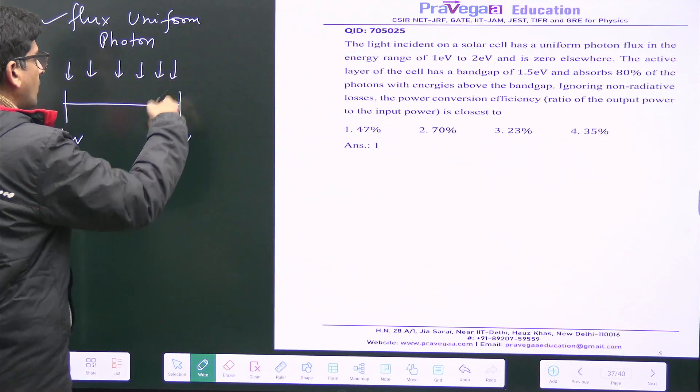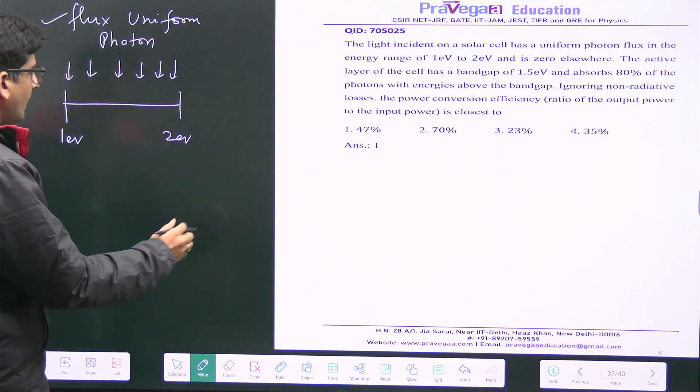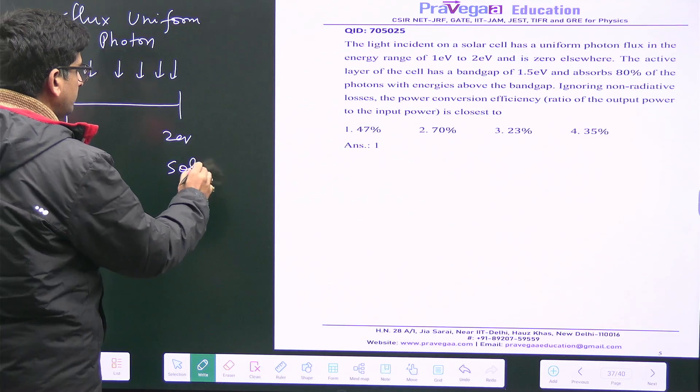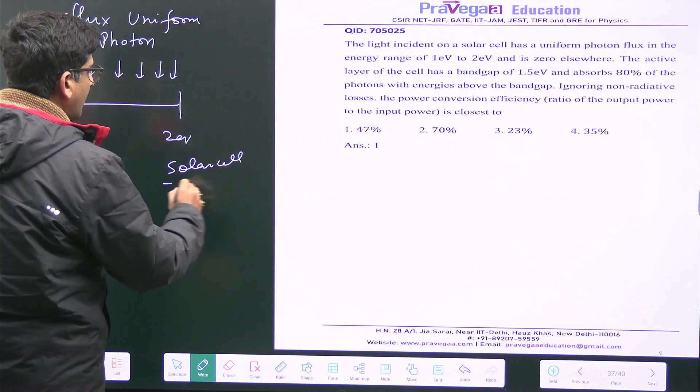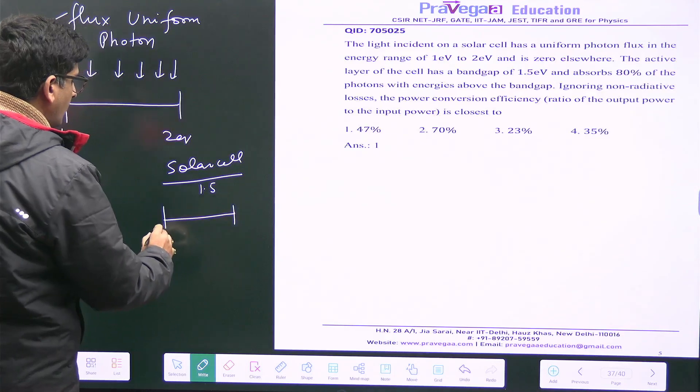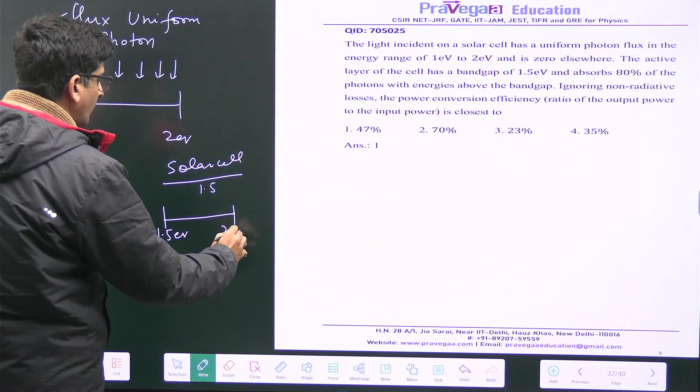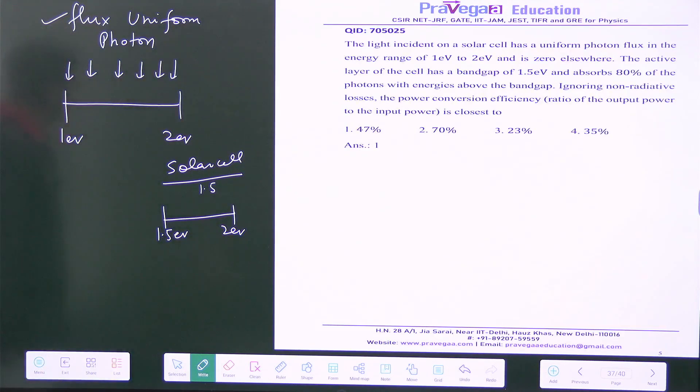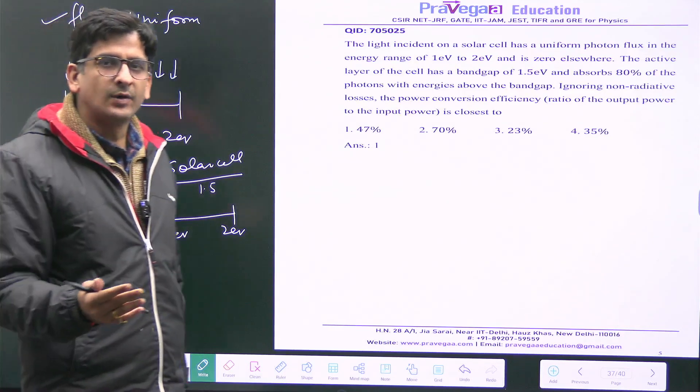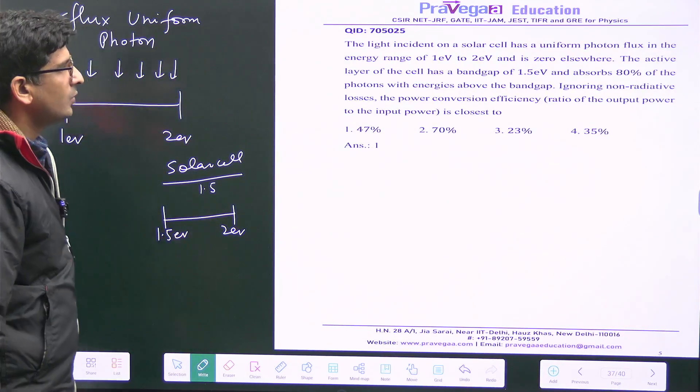But then you have a solar cell having a band gap of 1.5 eV. That means it will only take up photons from 1.5 electron volt to 2 electron volt. This is incoming, but it will only absorb above the band gap, so 1.5 to 2 electron volt it will absorb.